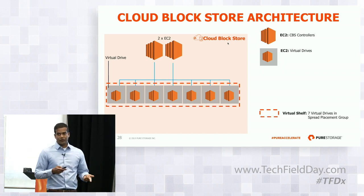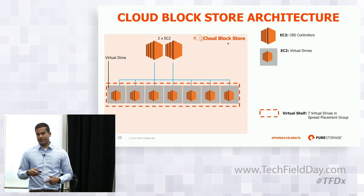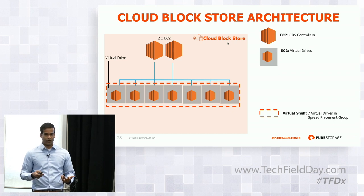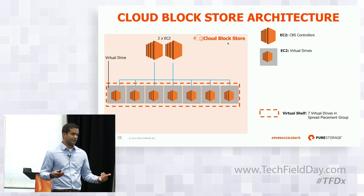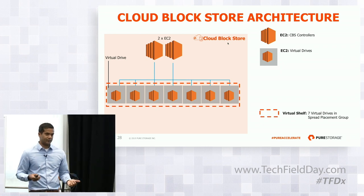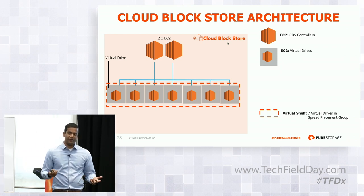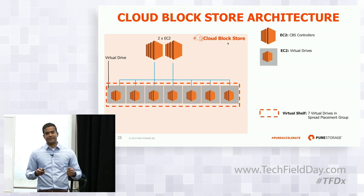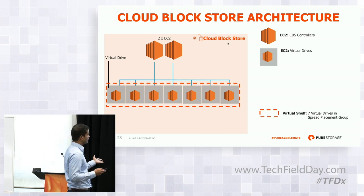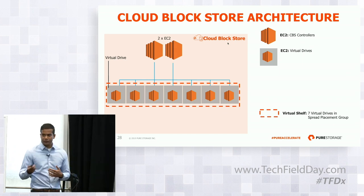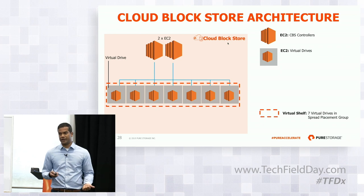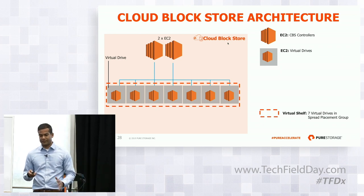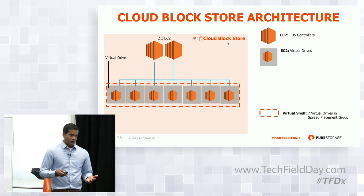We took those instances and put them in a spread placement group. There are seven instances within a single availability zone — the maximum width of a spread placement group is seven. What this gives us is that if a virtual drive fails because of some hardware failure, it's unlikely that another virtual drive will experience that same failure.